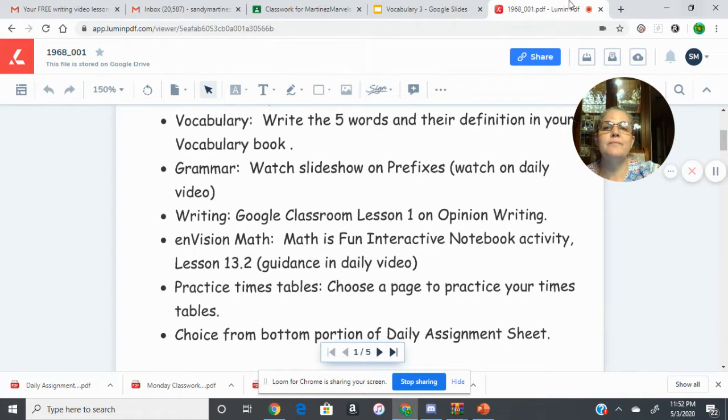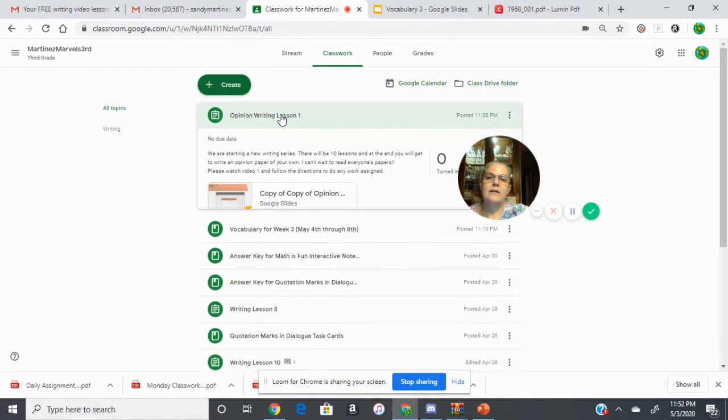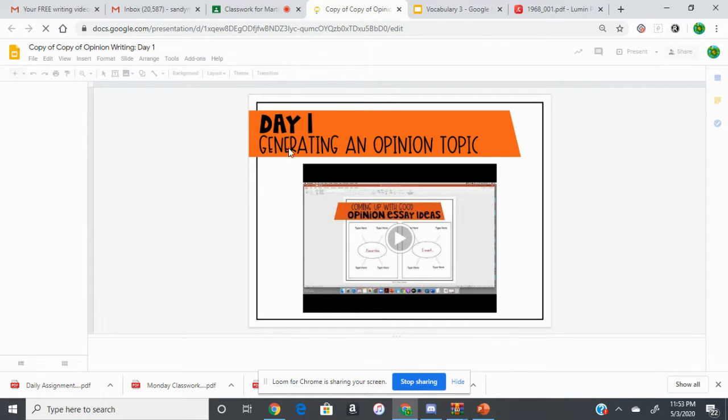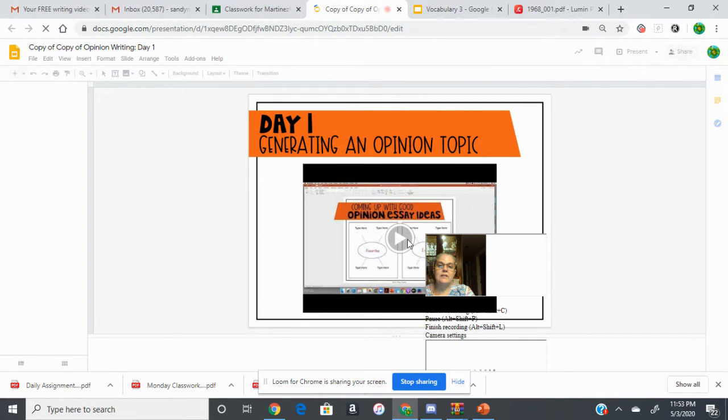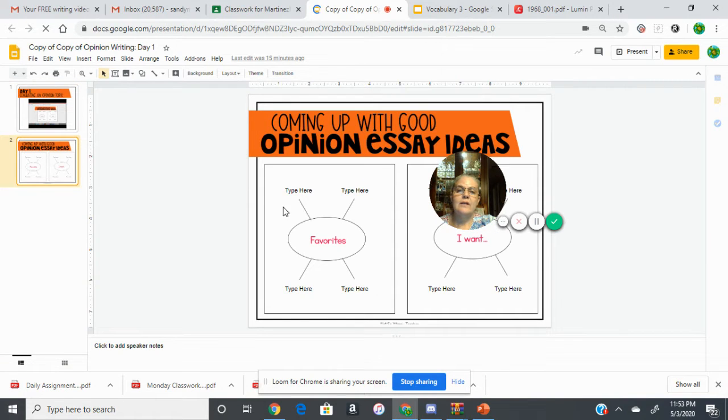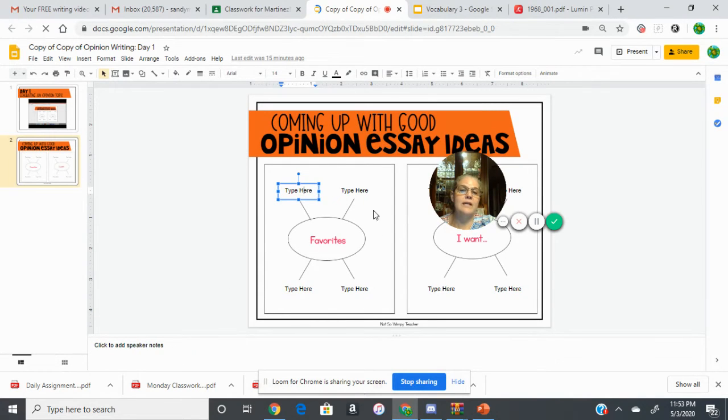Today, you'll go over to Google Classroom and you'll see opinion writing lesson one. We have a video to watch, and then you're going to do some work on slide two. There's four for favorites and four for I want. You need to finish all eight of those and then submit that. That will be your assignment today.